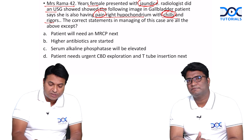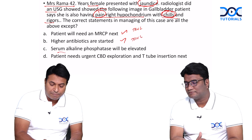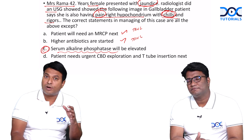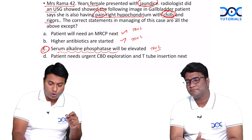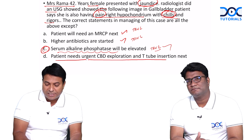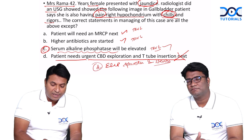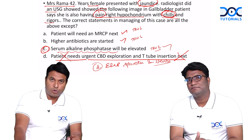Coming back to the question: the patient with cholangitis will need an MRCP — true. Higher antibiotics are needed — true. Serum alkaline phosphatase is elevated in any obstructive jaundice — true; this confirms it is obstructive, not medical jaundice, and MRCP is best for obstructive jaundice. Patient needs urgent CBD exploration and T-tube insertion — this is WRONG. The correct next step is ERCP sphincterotomy and stenting. So option D is the wrong answer. This is a classical integrated question on surgery and radiology.